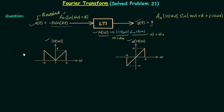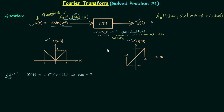Now we have all the knowledge to solve this question. The input x(t) = -5 sine(2t). Comparing this with the standard sinusoidal signal, we find ω₀ = 2. Now we will find the magnitude response when ω equals ω₀. For that we will first find the slope of the magnitude response line from the plot.